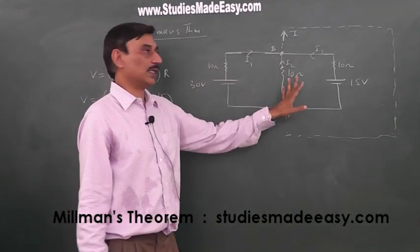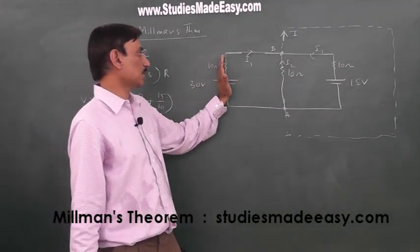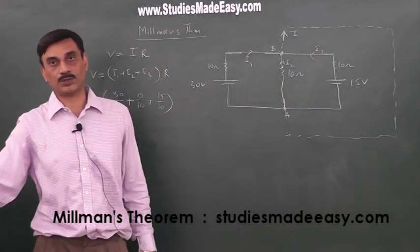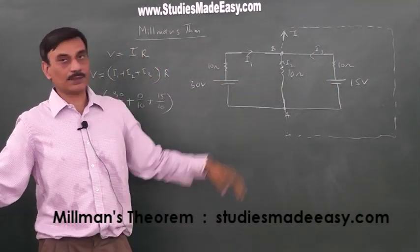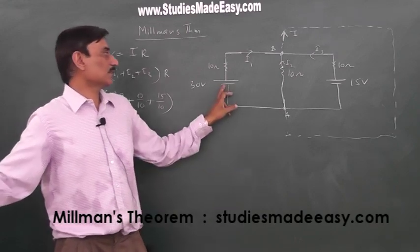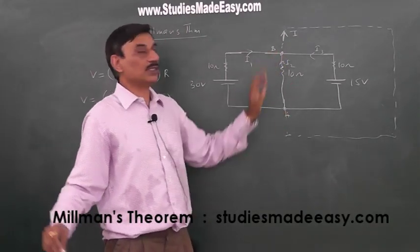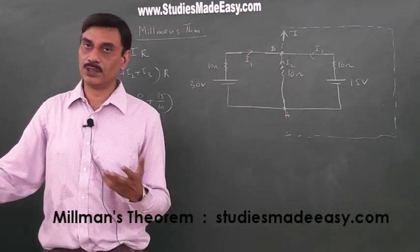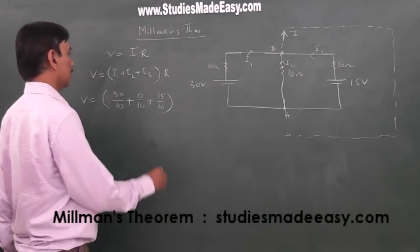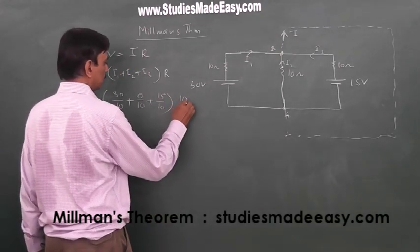There are 3 resistances, 10, 10, 10 ohm each. They are in parallel. So, equivalent resistance between A and B is going to be 10 by 3 ohm. So, R comes out to be 10 by 3 ohm.